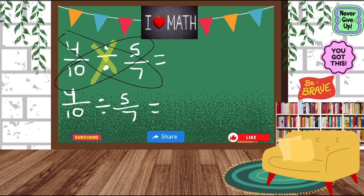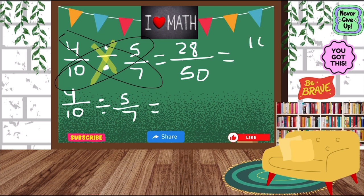So four times seven, and then five times 10. Four times seven is 28, and five times 10 is 50. What do we know about this fraction? It's not an improper fraction, but it can be simplified. So if you just ask yourself, well, how do I simplify this? Go watch my video on how to simplify a fraction. When we simplify 28 over 50, we get 14 twenty-fifths. If you want to know how I did that, go check out the video on how to simplify.